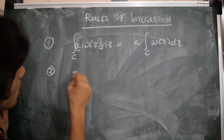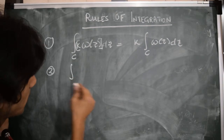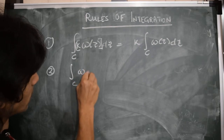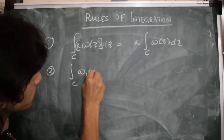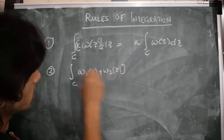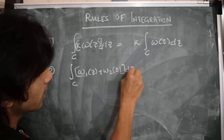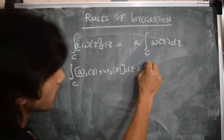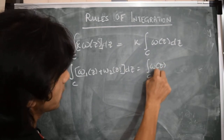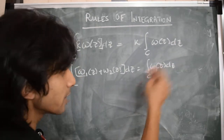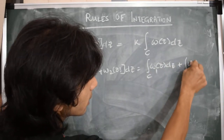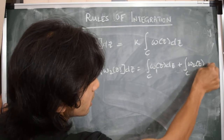A second property again follows from the linearity of the Riemann sum. If we have two functions w1(z) plus w2(z), which we are integrating along the same contour c, then the integral of their sum is equal to the sum of their integrals — the integral of w1(z) dz plus the integral of w2(z) dz.